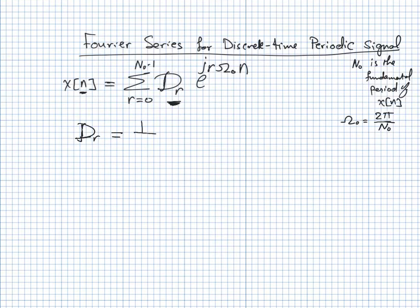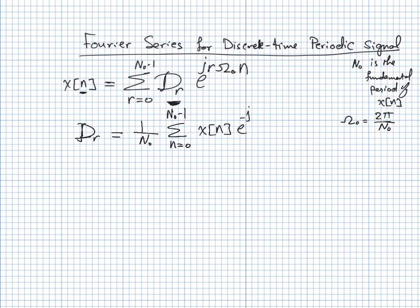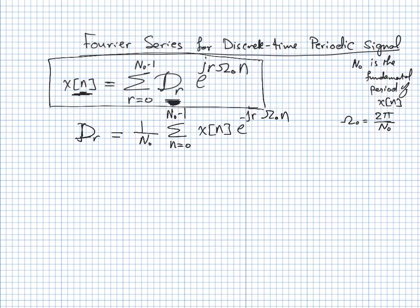The definition of D_r is: D_r equals (1/N_0) times the summation from N equals 0 up to N_0 minus 1 of X(N) multiplied by E^(−j·R·ω_0·N). The period has N_0 points, so if you start from zero you finish at N_0 minus 1. This is how you find the Fourier series coefficients from a known time-domain signal.